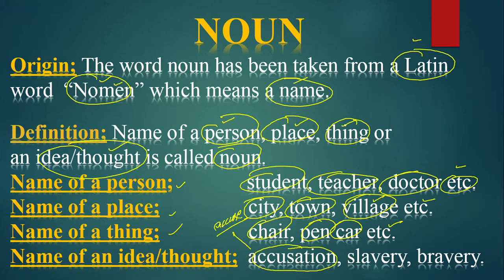Accusation is the name of an action, taken from the verb 'accuse.' Accusation is when you blame someone. For example: 'Accusation of innocent people is injustice.' When you blame someone saying he has done wrong, and maybe he has not done it — you are just taking his name and blaming him — that is known as accusation. It is the name of an action you can only mentally think about.